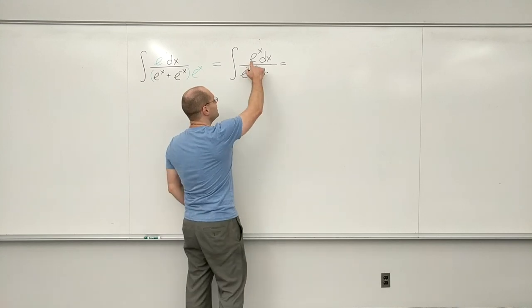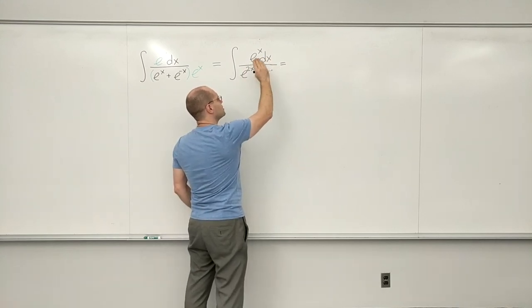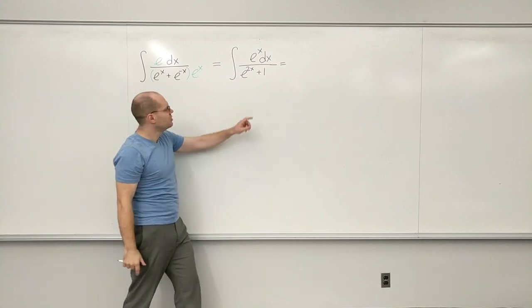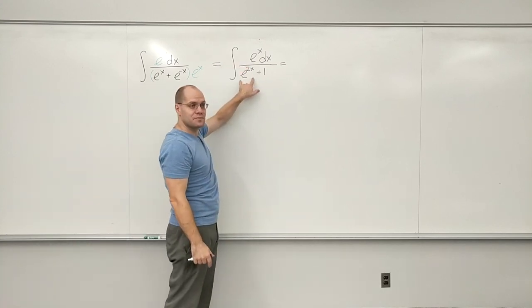I don't find a need to do the formal substitution u equals e to the x. There's no need for that. We already see 1 over 1 plus something squared.